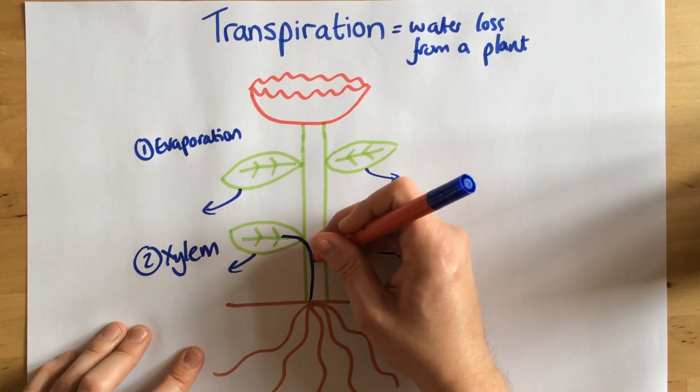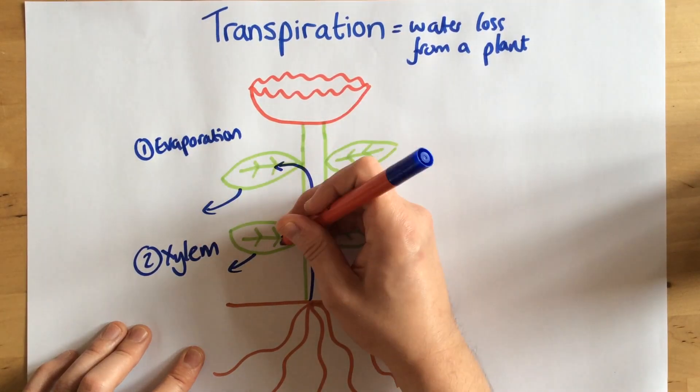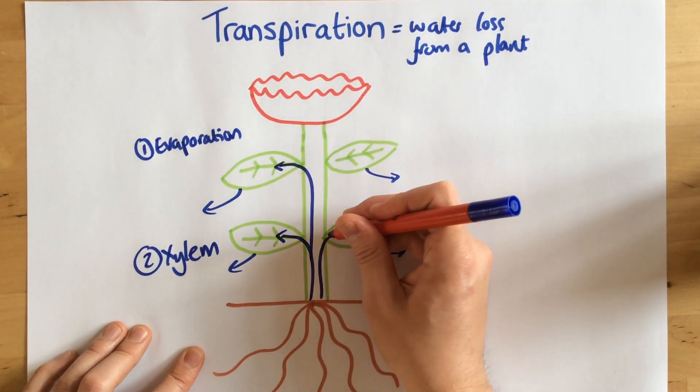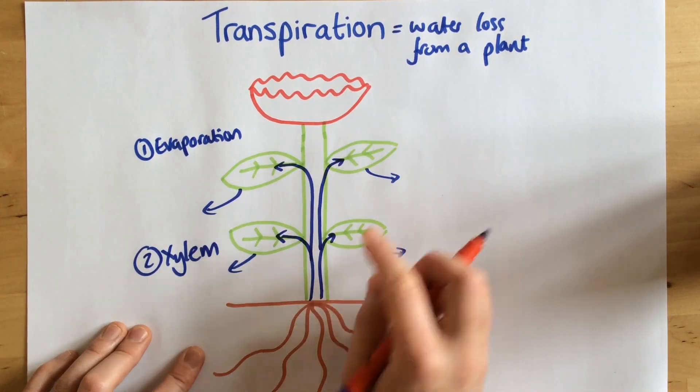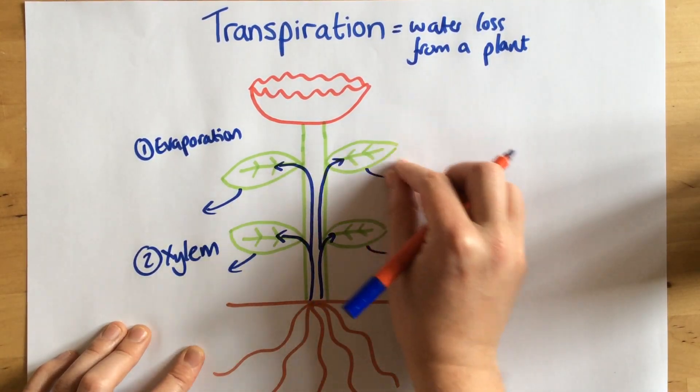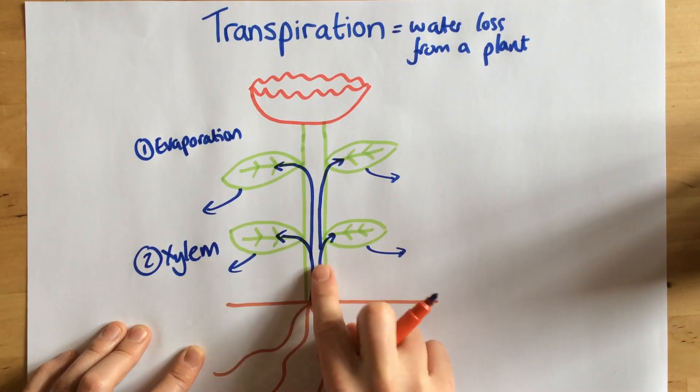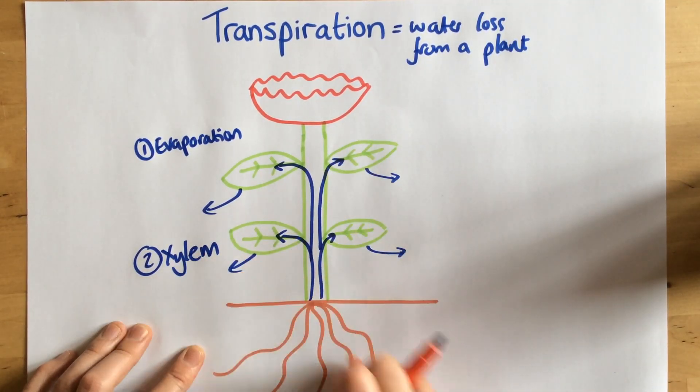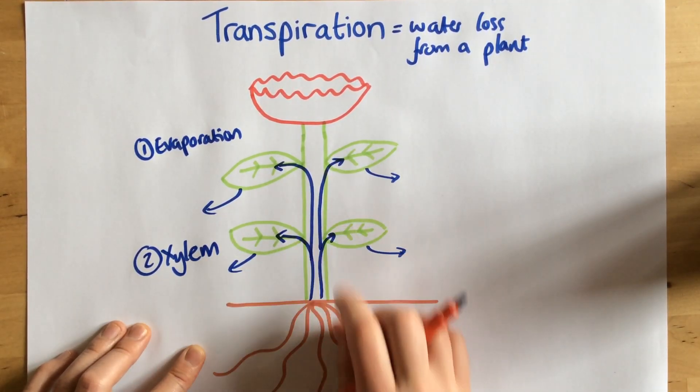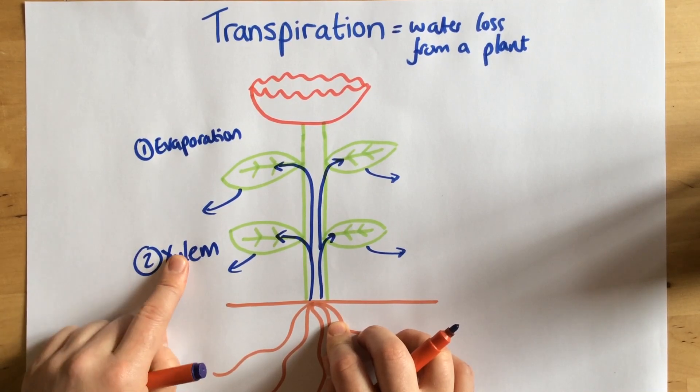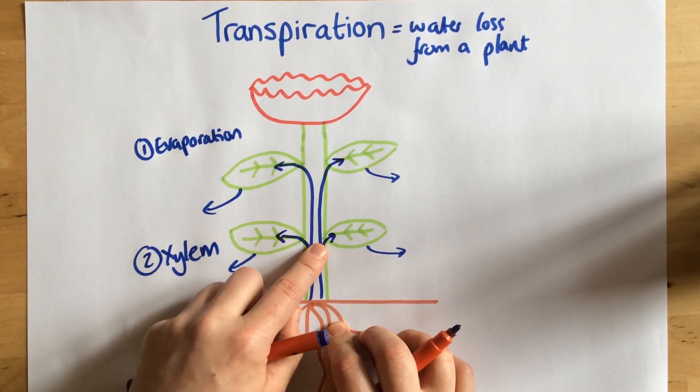So some water will be drawn up that way, others will be drawn up that way, and same on the other side as well. So as the water diffuses out, it causes more water to be drawn up through the xylem. Remember, the xylem are just tubes that water travels through, also mineral ions which are dissolved within the water.